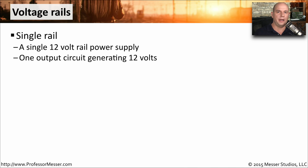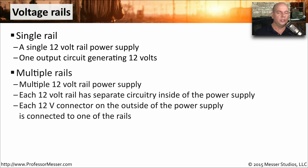You may see power supplies described as a single rail or a multi-rail power supply. With a single rail power supply, there is a single 12-volt rail providing those 12 volts to the motherboard — one single circuit providing one set of output. A multiple rail power supply has multiple 12-volt rails, each on separate circuitry, so they are separated from each other. Each time you connect one of the 12-volt connectors onto the back of that power supply, it's going to be using a separate rail.